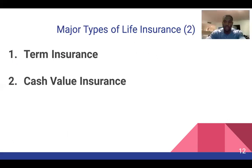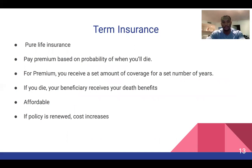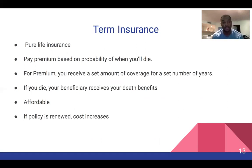There are two types of life insurance: term insurance and cash value insurance. Term insurance is basically pure life insurance — you pay a premium based on the probability that you'll die. For the premium, you receive a set amount of coverage for a set number of years. If you die, your beneficiary receives your death benefits. An advantage is that it's affordable, though if your policy is renewed the costs increase.